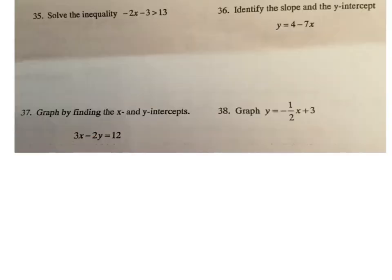The next problem is an inequality, and we need to remember that the difference between an inequality and an equation is when we divide or multiply by a negative, the sign flips. So in this case, we have negative 2x minus 3 is greater than 13. We're going to add 3 to both sides. I get negative 2x is greater than 16.